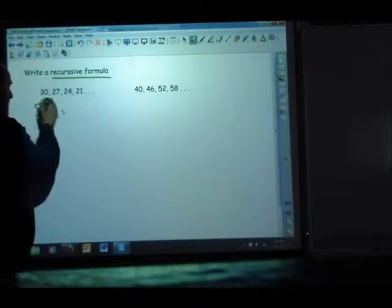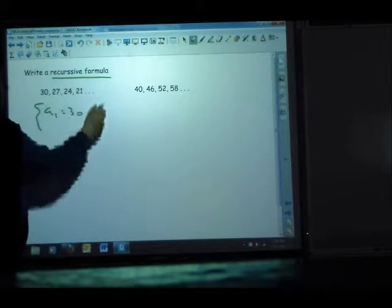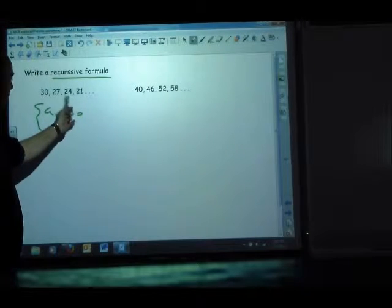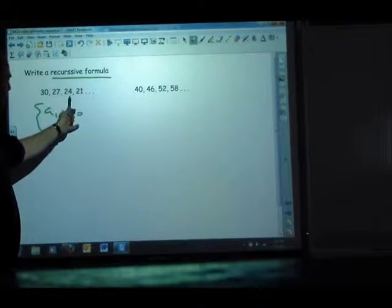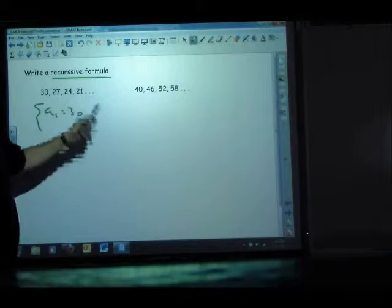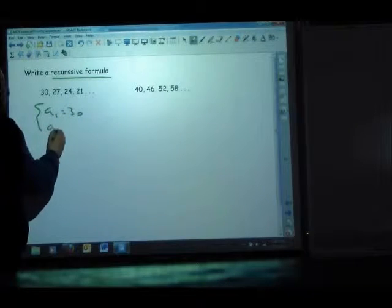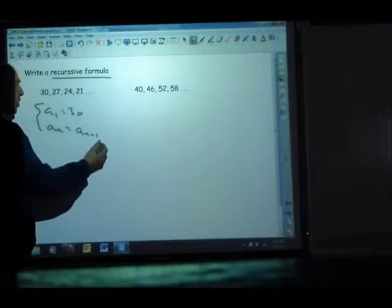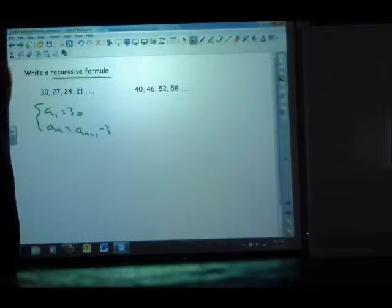So, A1 is 30. Now, what are we doing to work our way down the line? How am I getting the third term? I'll look at the previous, minusing 3. I'm always subtracting 3 from the previous term. So, you would see something like, A1 equals, the previous would be AN minus 1, and I'm taking away 3.